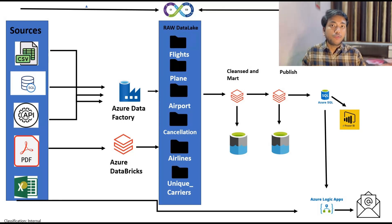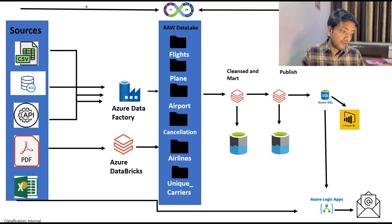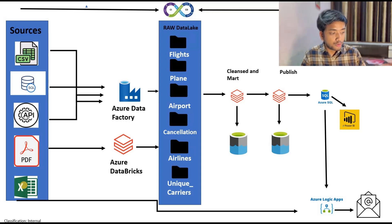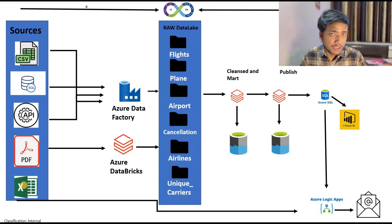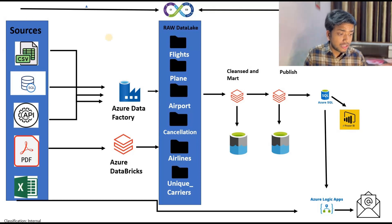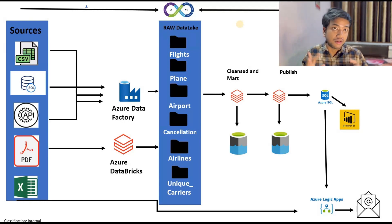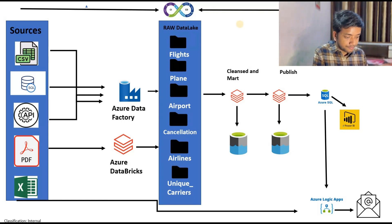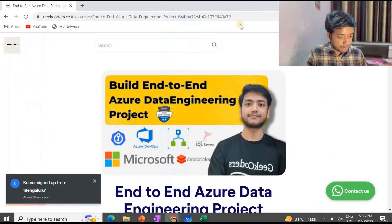I also told you about the Automation Account Runbook — how we can set it up, how we can use it, and what its applications are. I also told you about Power BI — what it is, how we can create a report and do some checks in Power BI. Apart from this, I have also shown you the CI/CD pipelines — what a CI/CD pipeline is, what Azure DevOps is, what a build is, what an artifact is, what a release is, and other related topics.